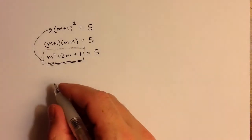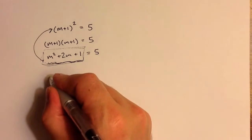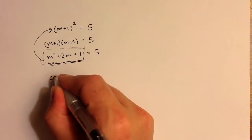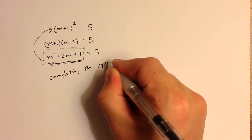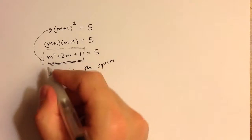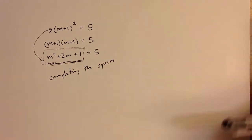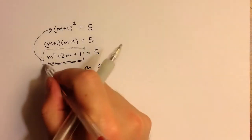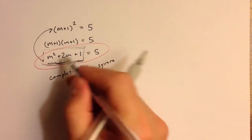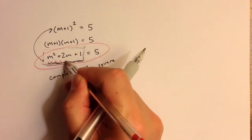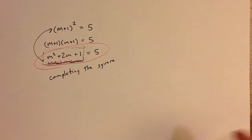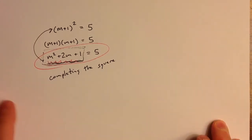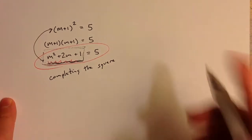There's a process called completing the square that lets us solve equations that look like this when we don't start with a perfect square trinomial. So let's take a look at that process.